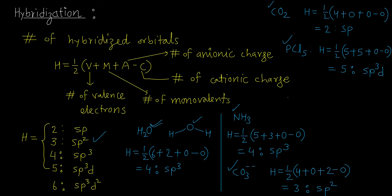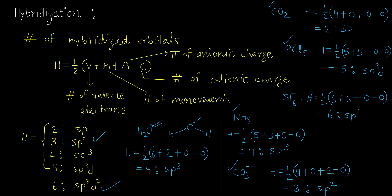Finally, SF₆, sulfur hexafluoride. The central atom is sulfur (electronic configuration 2,8,6), so v = 6. Fluorine is monovalent, so m = 6. a = 0, c = 0. So H = ½(6 + 6) = ½ × 12 = 6. Six hybridized orbitals means the hybridization is SP3d2.